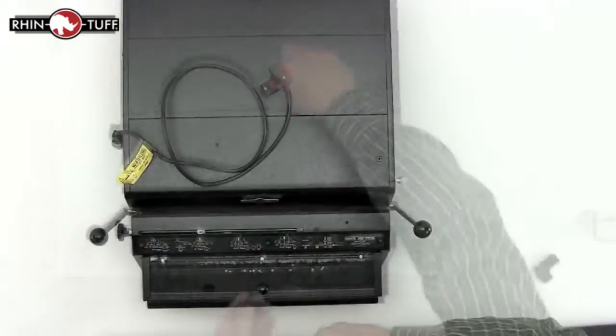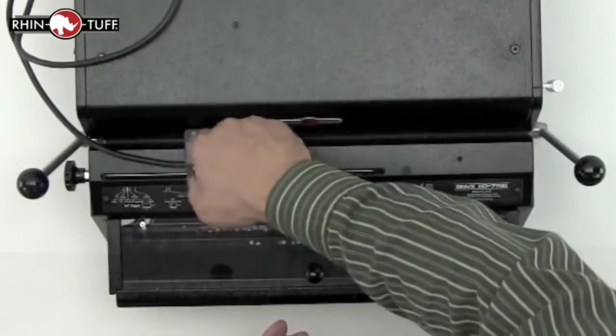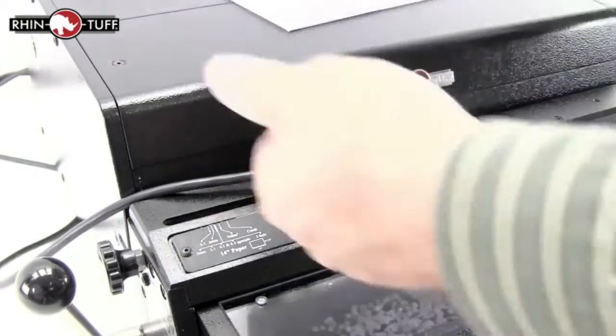The optional Versa switch can also be purchased and added right here to the top of the machine in place of the paper stop and it becomes an automatic trigger for the punch machine when papers are put into the throat.